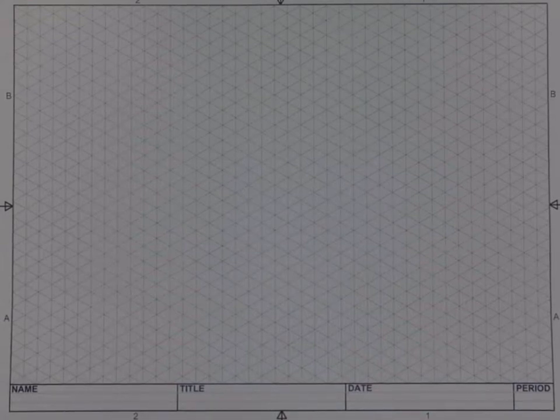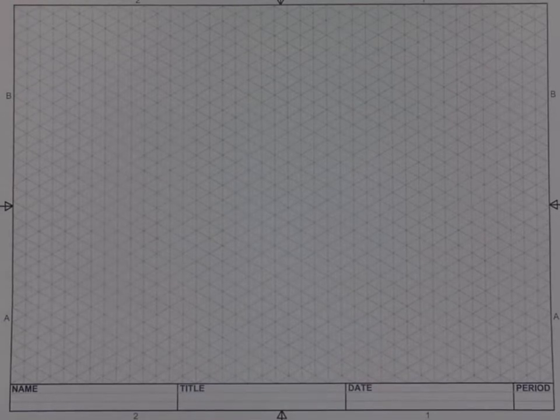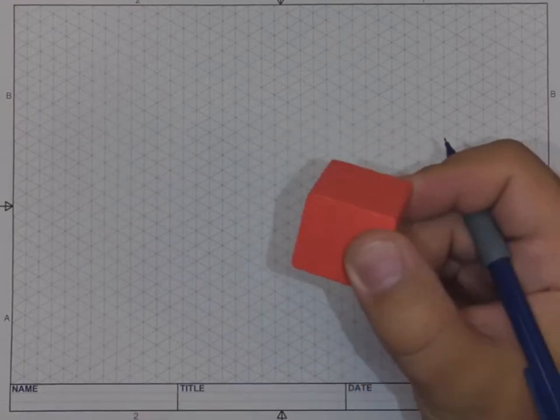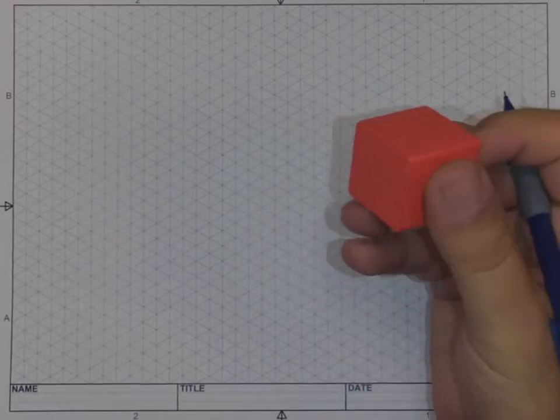In this video we're going to cover sketching one simple object in isometric orientation, specifically looking at one of the construction blocks, this cube shape.